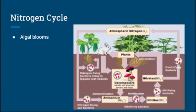Algal blooms are a major problem that occur in lakes and are connected to the nitrogen cycle. They are formed from excessive nutrients in the water. The algae grows extremely rapidly, producing an excessive amount of dead algae. The decaying process consumes lots of oxygen in the water, which can be very harmful for fish living in the lake.